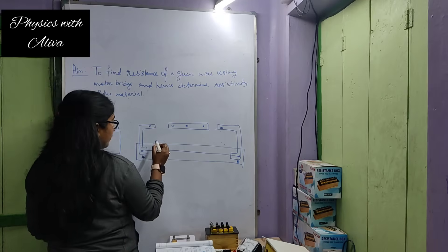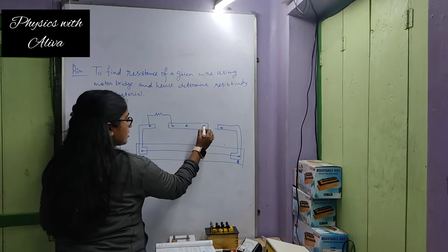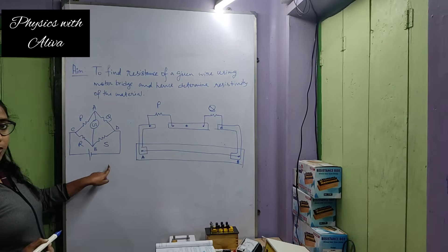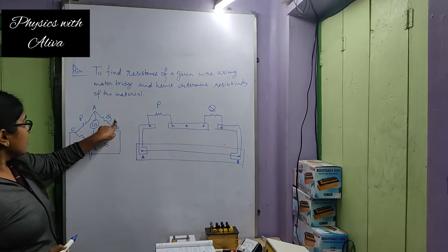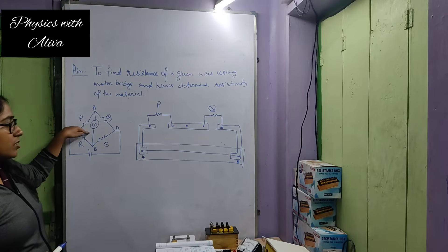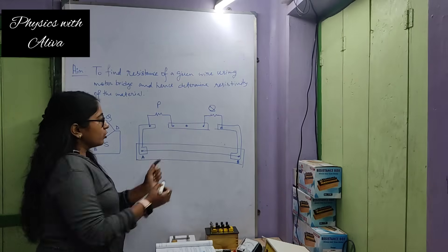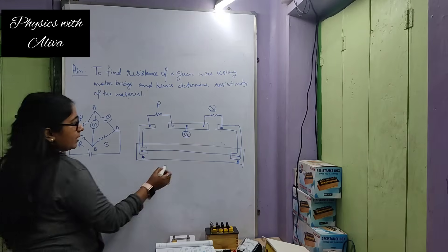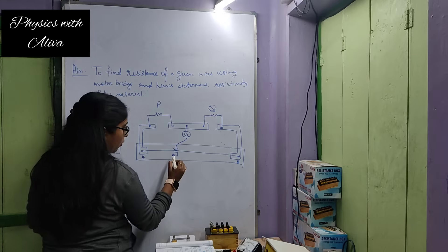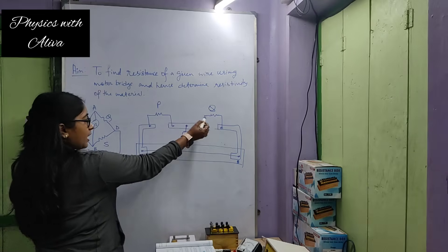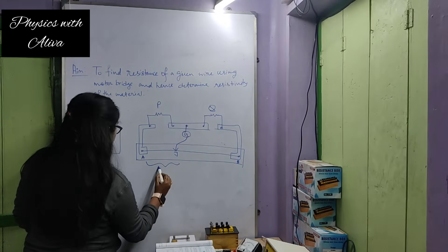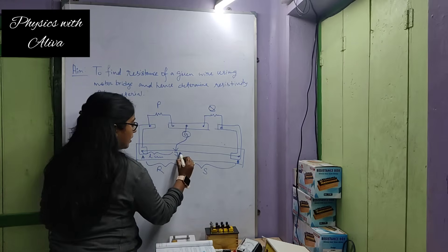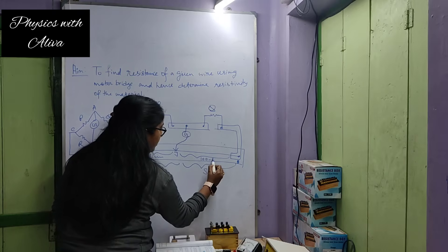We will connect a resistance here and another resistance here. This will be our P and this will be our Q. In this Wheatstone bridge circuit, between AB, the junction is known as A. The galvanometer is connected at the junction of P and Q, and the other end of the galvanometer is at the junction of C and D, connected via the jockey. This is our P and Q, and this will be our resistance R and resistance S. This is the length of the wire of the meter bridge — suppose this is L centimeters, then the remaining length will be 100 minus L centimeters.